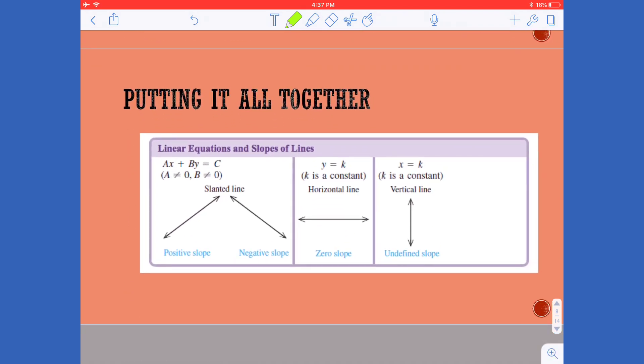So this slide just puts it all together reminding you that we can have positive slopes, we can have negative slopes, we can have zero slopes for our horizontal lines and that we can have undefined slopes for our vertical line.